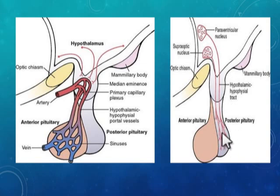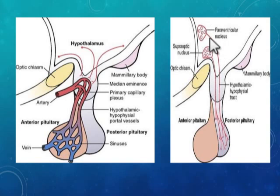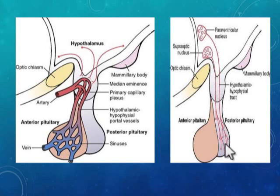The hormones secreted by the posterior pituitary are actually synthesized in the supraoptic and paraventricular nuclei of the hypothalamus. These hormones are transported through the axoplasm of these neurons and then secreted into the posterior pituitary.